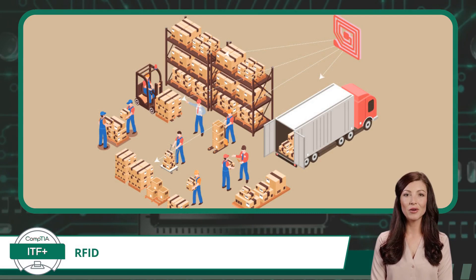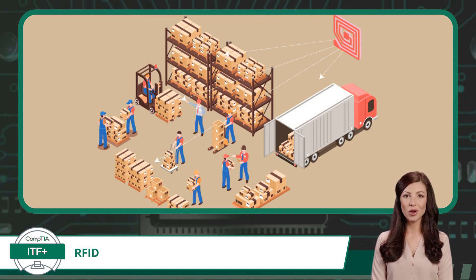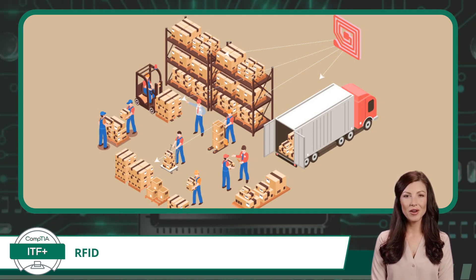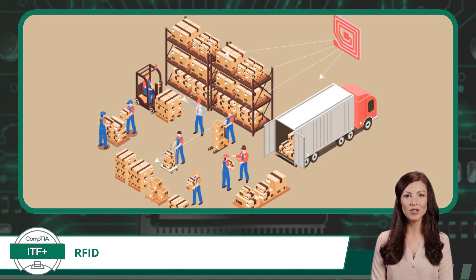RFID technology is widely utilized for inventory control and tracking due to its ability to provide accurate and efficient identification and monitoring of assets. By tagging items with RFID tags and deploying RFID readers, businesses can automate inventory management, streamline supply chain operations, and gain real-time visibility into stock levels, location tracking, and movement history.